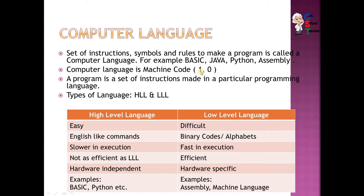There are two types of computer languages: high level language and low level language. In the beginning, in the era of the 50s and 60s, programmers used to program using machine language — using a set of switches to pass commands. The first language which used alphabets instead of binary commands was assembly language. At that time, we did not have any concept of high level or low level languages. Assembly language was the first language closer to human language.